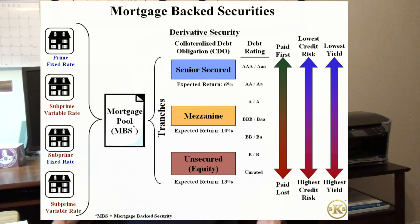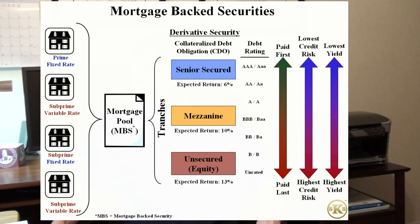The bubble model of mortgage generation is known as originate to distribute. Banks and brokers originated mortgage loans and captured transaction fees while distributing risk to investors in mortgage-backed securities.